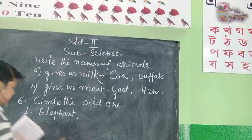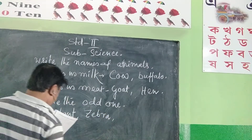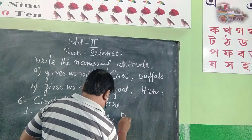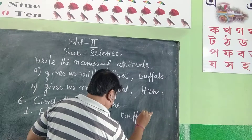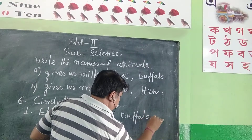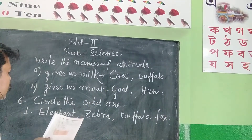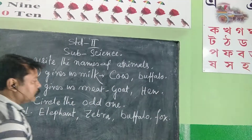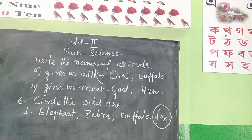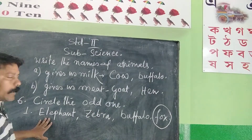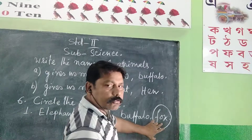We'll have a zebra, bacteria, and fox. Which is — we circled the word one. This is a fox. Why? Fox is a flesh-eating animal. This is a flesh-eating animal. Odd one: Fox. Okay.